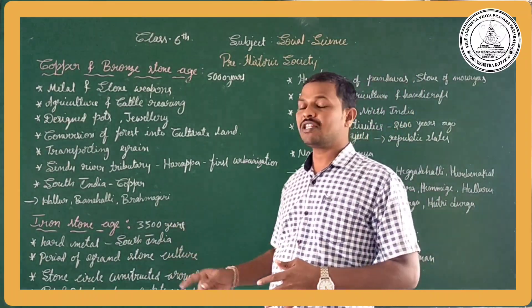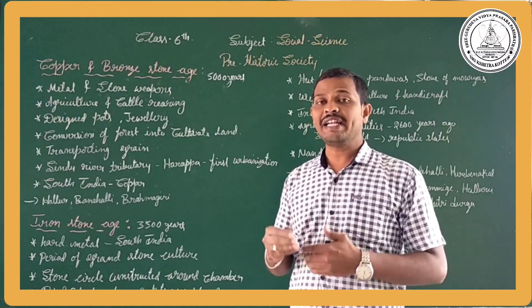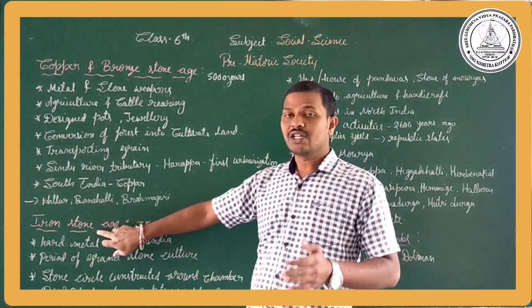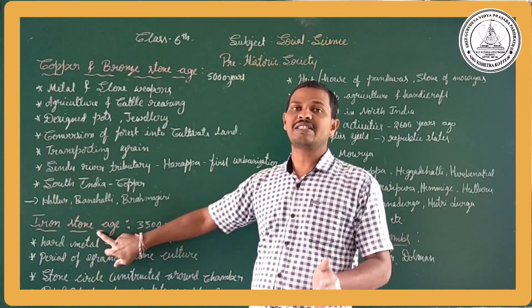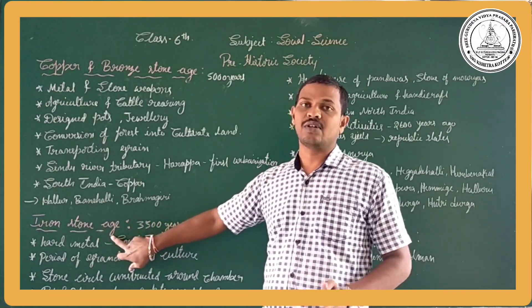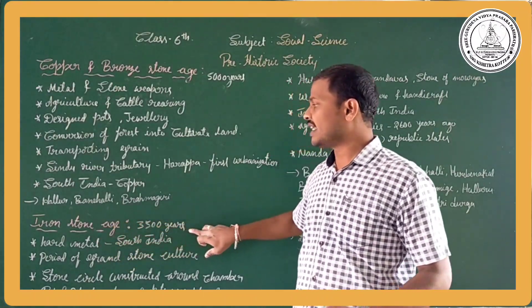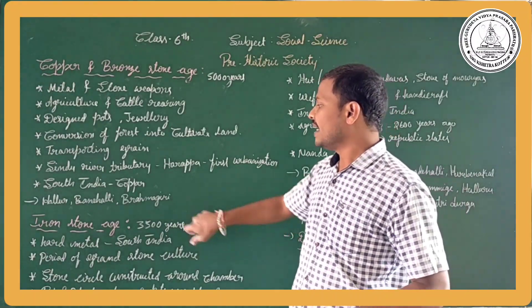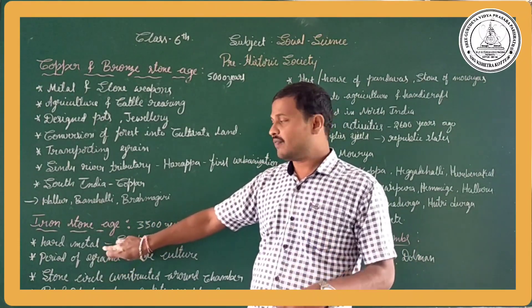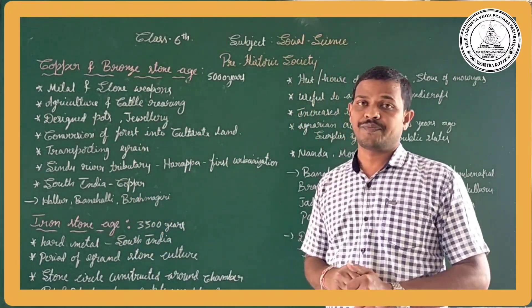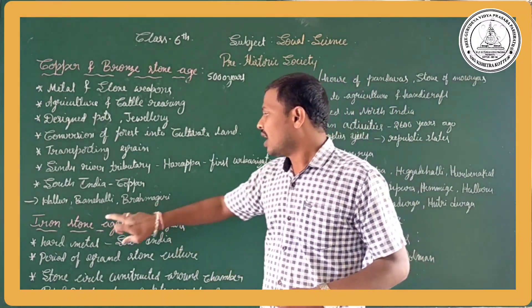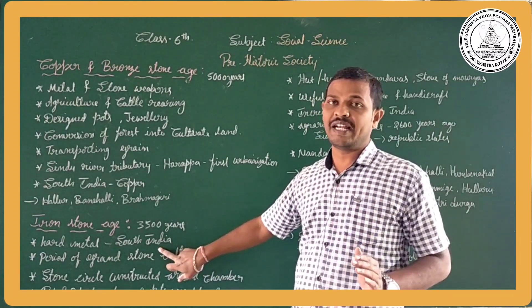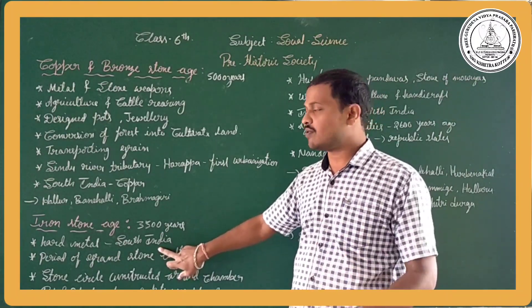Then we also found the Iron Stone Age. It is named iron stone age because with metals they also continued to use stone weapons. The Iron Stone Age is found before 3500 years ago. Iron is one of the hard metals compared to copper and bronze, and it was especially found in South India, not in the northern part of India. Almost all South Indian people used iron.